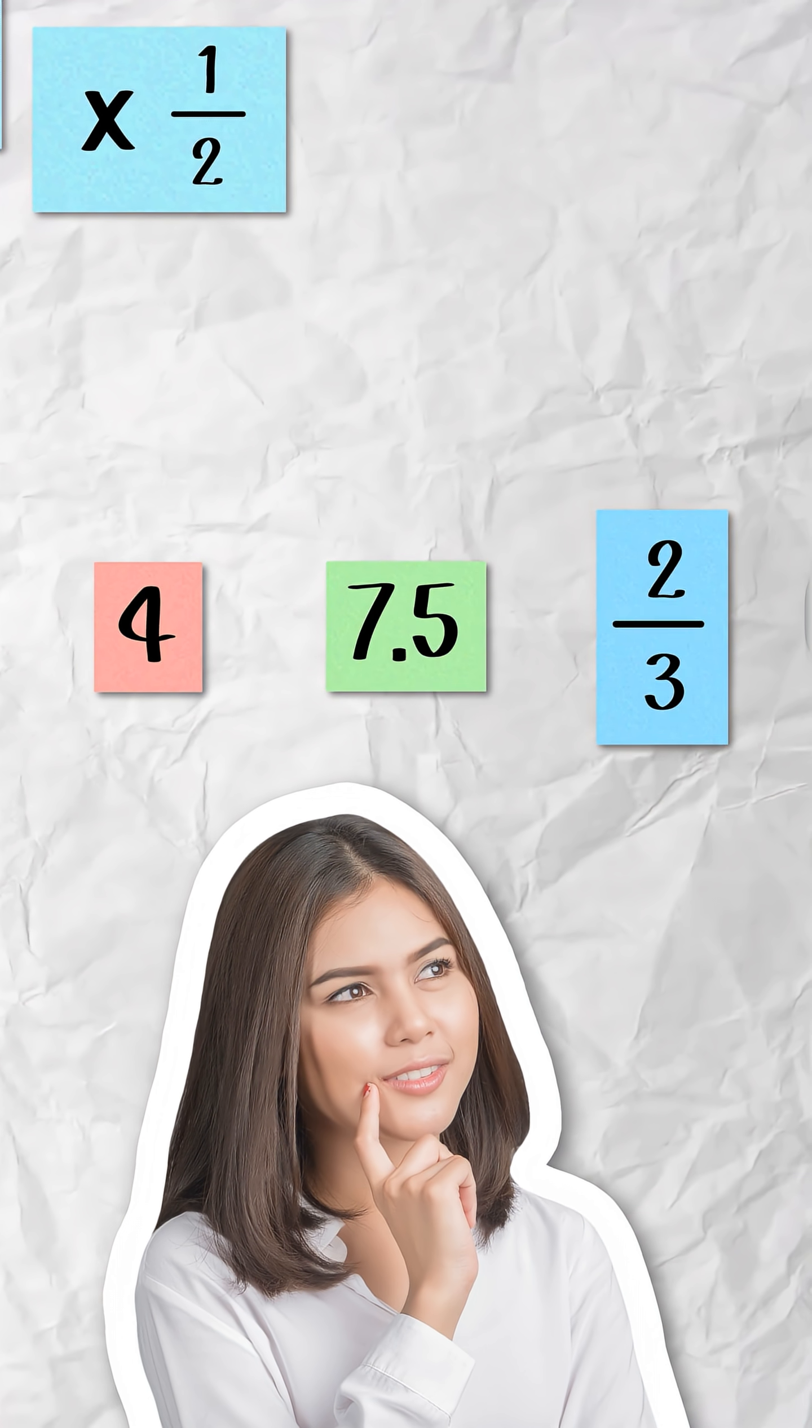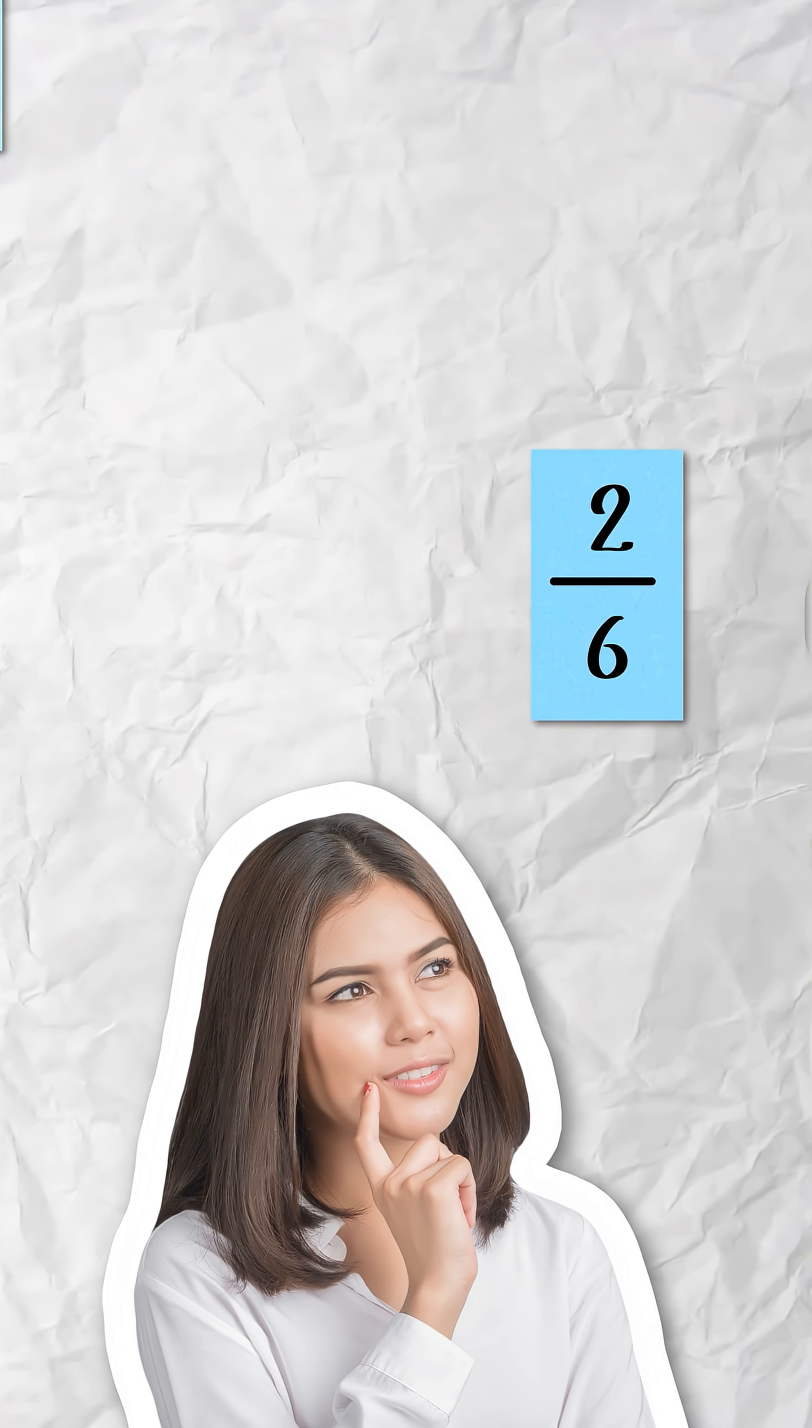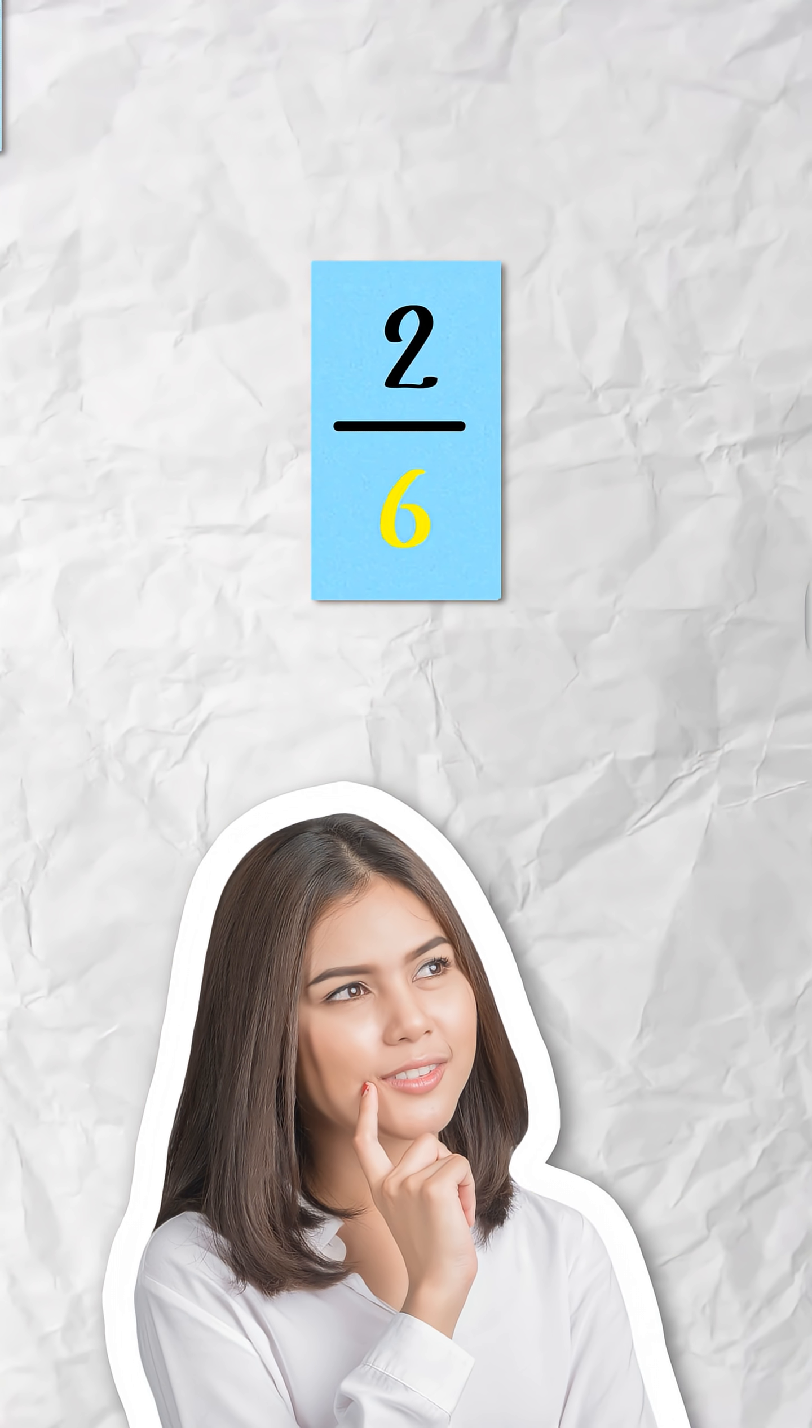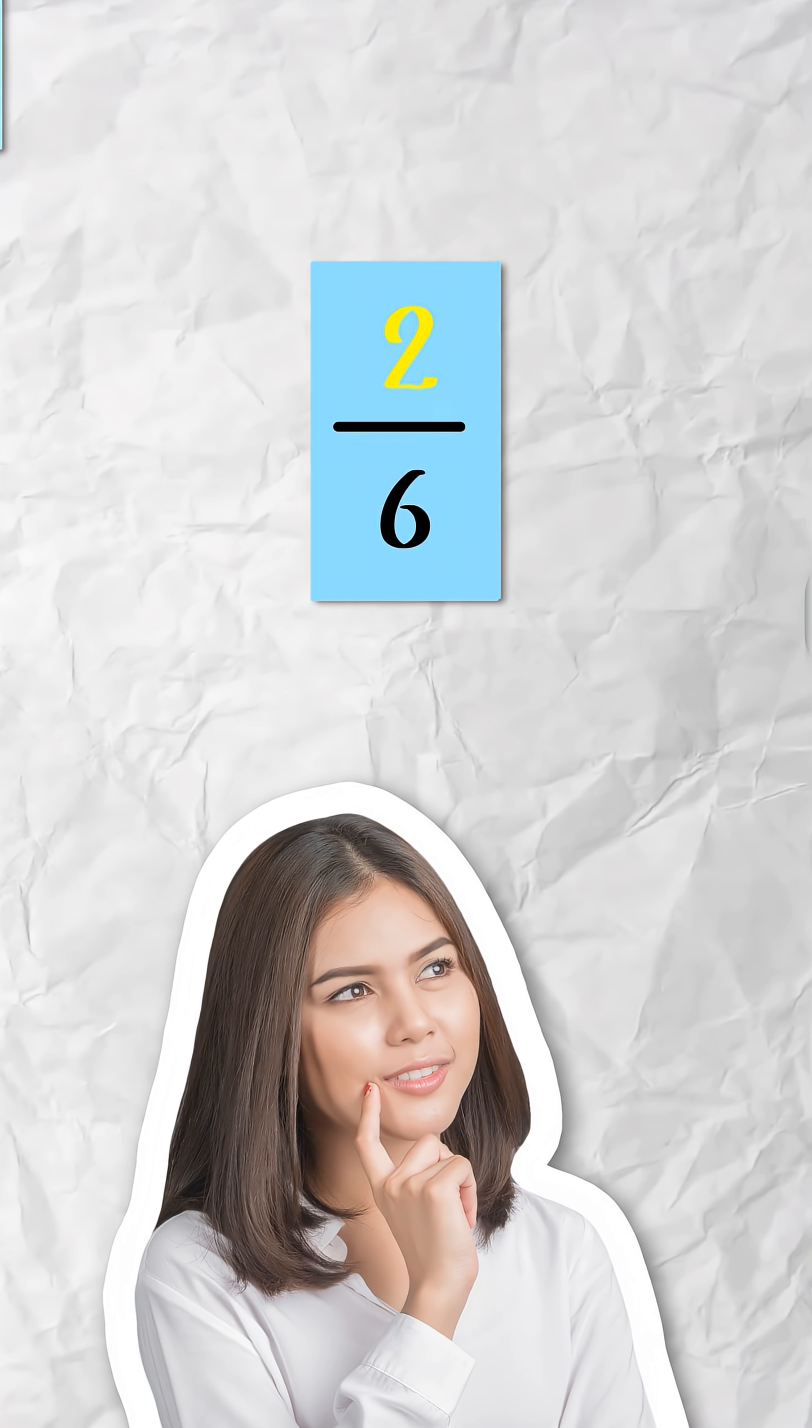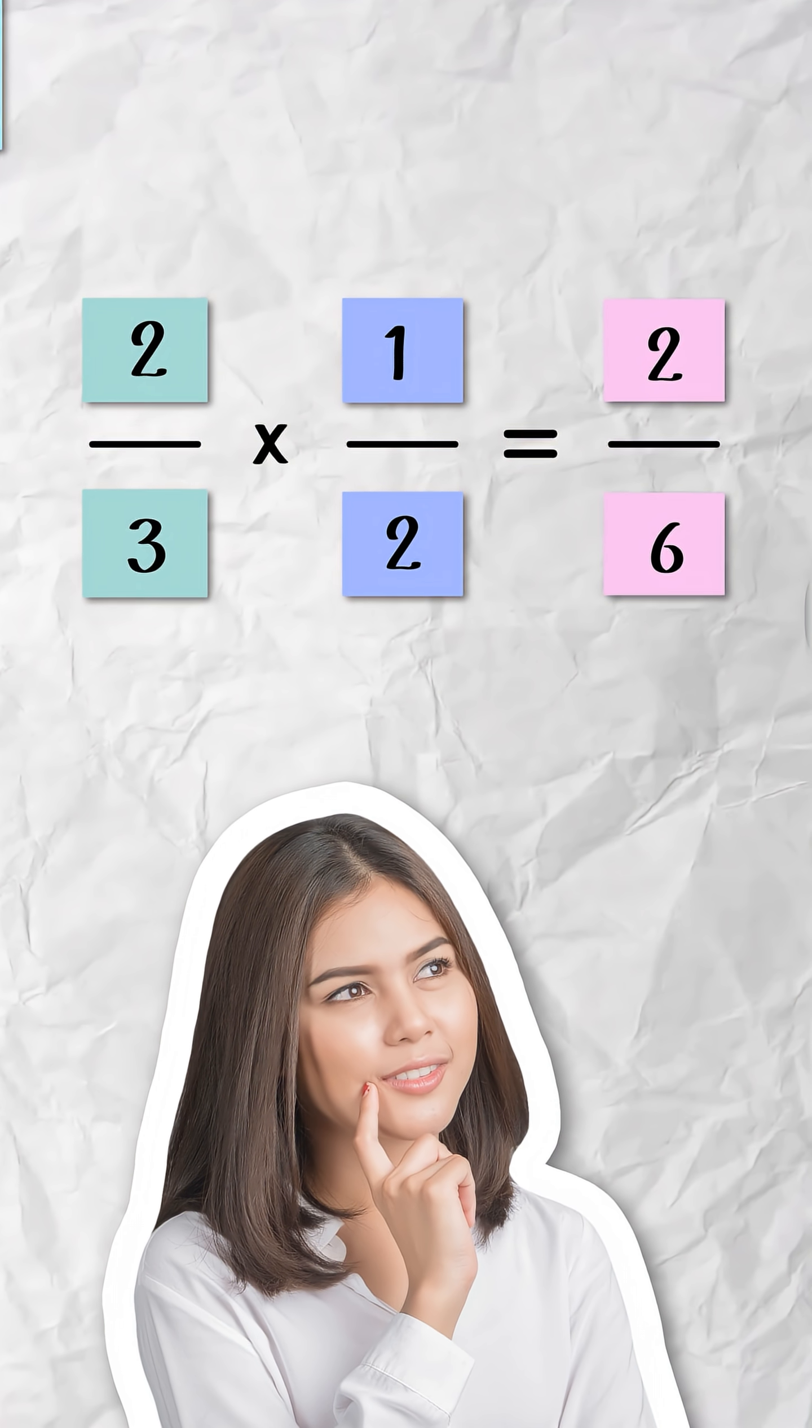By focusing on what multiplication means, we can see that the same reasoning applies across all types of numbers. And when we connect that reasoning to how fractions are written, where the denominator represents how many equal parts make a whole and the numerator represents how many of those parts we have, it becomes clear why we multiply numerators and denominators when multiplying fractions.